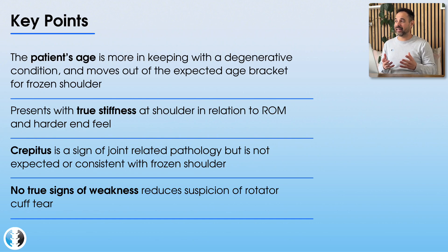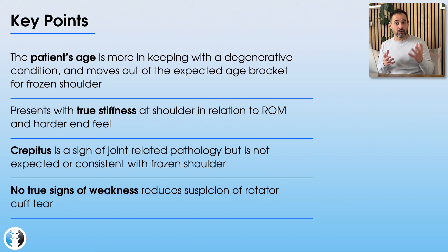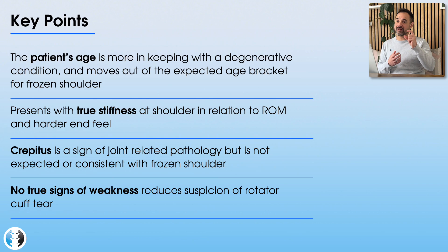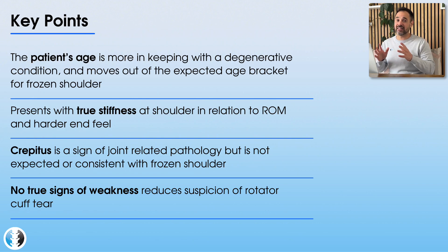The other condition considered was a rotator cuff tear. However, this patient has no pain on rotator cuff resisted tests and only a small reduction in strength, which is understandable given the reduced range of movement — pain means we don't use the arm as much. For a rotator cuff tear we'd expect a potential trauma onset, especially in a 68-year-old. The absence of weakness and pain on strength testing suggests a rotator cuff tear is certainly unlikely.